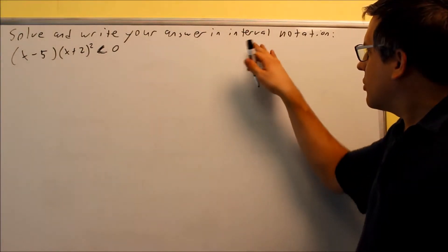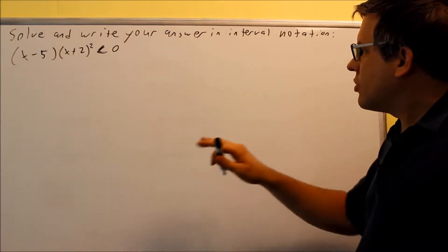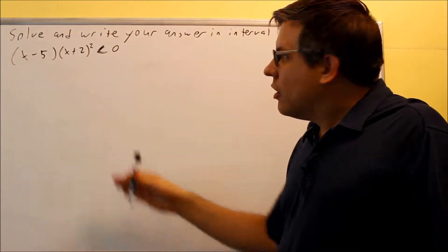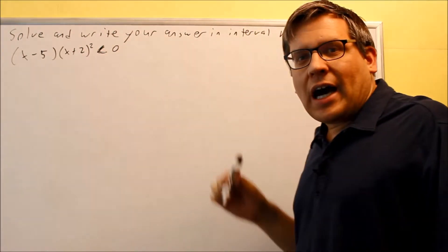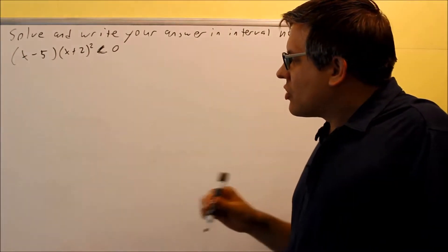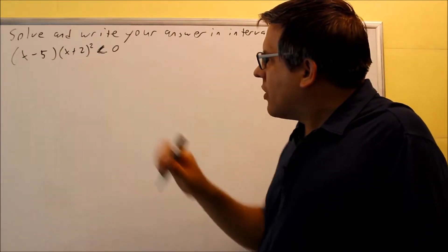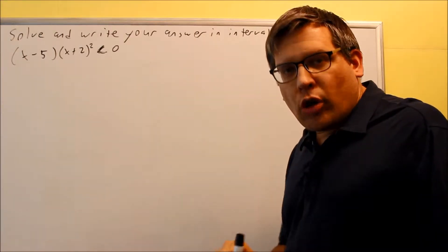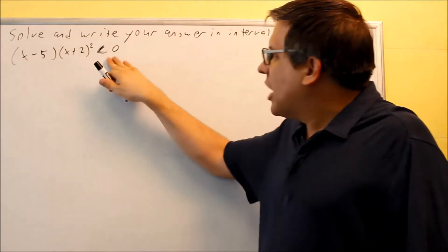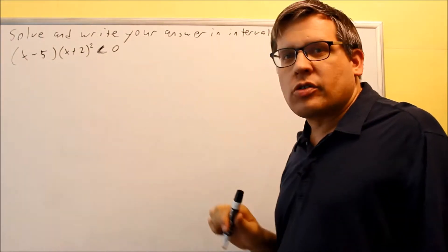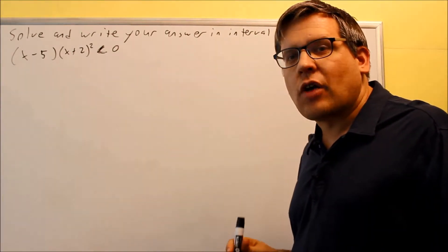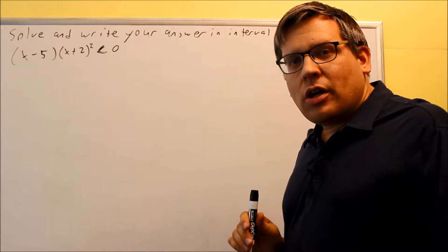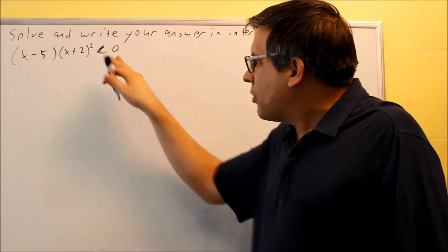We want to solve and write our answer in interval notation. The problem we're solving is an inequality involving higher powers. This is a special process we're going to use. What you don't want to do is just set x minus 5 less than 0 and x plus 2 squared less than 0. That's not the correct way — you're not going to get the complete answer if you do that.